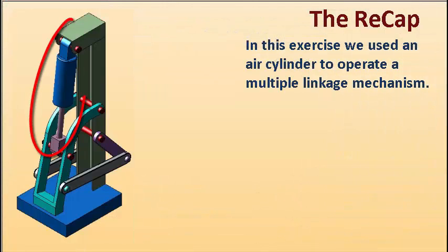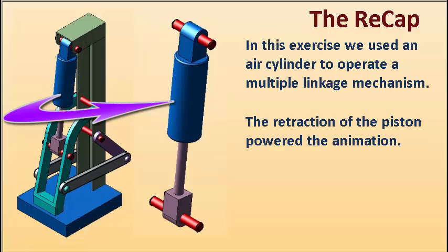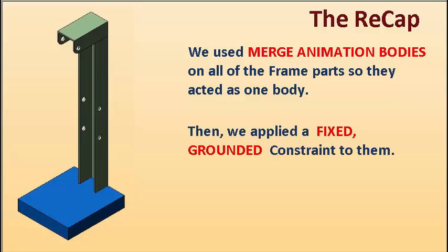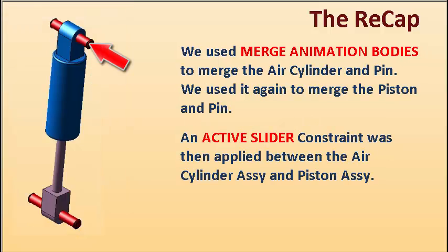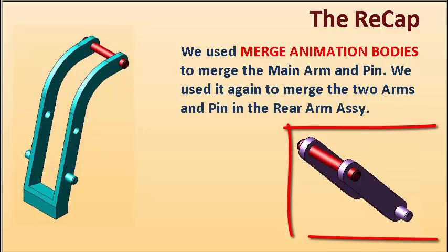So let's recap. In this exercise we used an air cylinder to operate a multiple linkage mechanism. The retraction of the piston powered the animation. We used merge animation bodies on all of the frame parts so they acted as one body, then applied a fixed grounded constraint to them. We used merge animation bodies to merge the air cylinder and pin, and again to merge the piston and pin. An active slider constraint was applied between the air cylinder assembly and piston assembly. We used merge animation bodies to merge the main arm and pin, and again to merge the two arms and pin in the rear arm assembly.